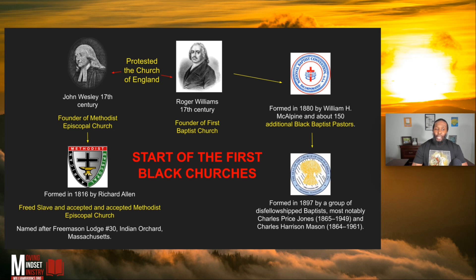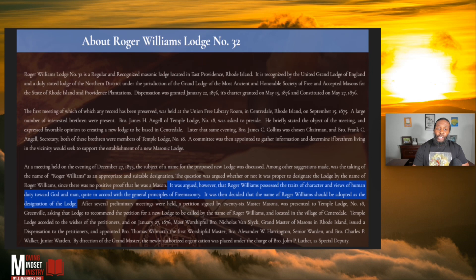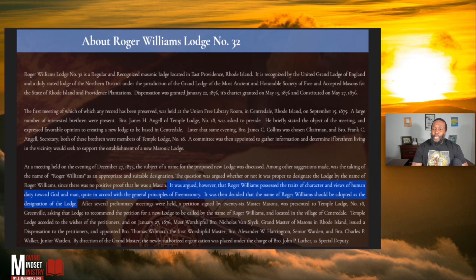First Baptist church is the largest denomination in the world, then you have COGIC and Methodists behind that. Something interesting about Roger Williams: people love their Baptist church and their denomination — they'll fight the Calvinist folks and all other kinds. But the truth is, Roger Williams was a very interesting character. According to what was written about him in Freemason Lodge 32, they argued that Roger Williams possessed traits of character and views of human duty towards God and man quite in accord with the general principles of Freemasonry. It was then decided that the name of Roger Williams should be adopted as the designation of the lodge.